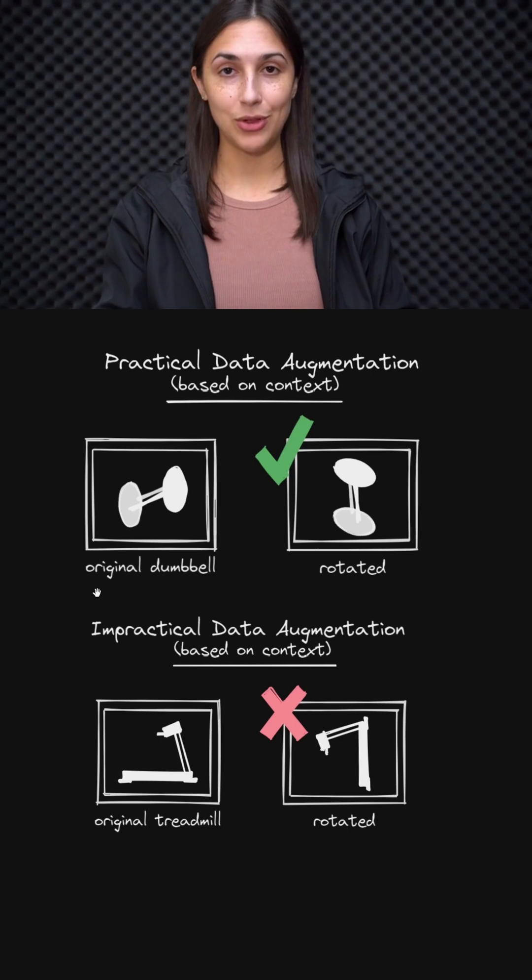So for example, if we have images of dumbbells in our dataset like here, then we may assume that it would be reasonable to create augmented images such that a horizontal dumbbell as shown here is rotated to be a vertical dumbbell.